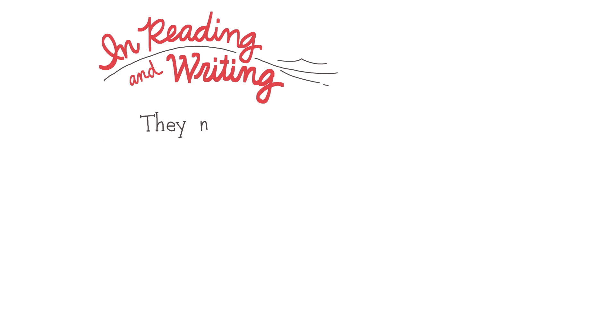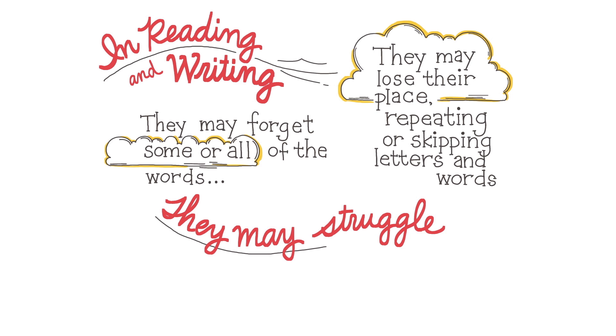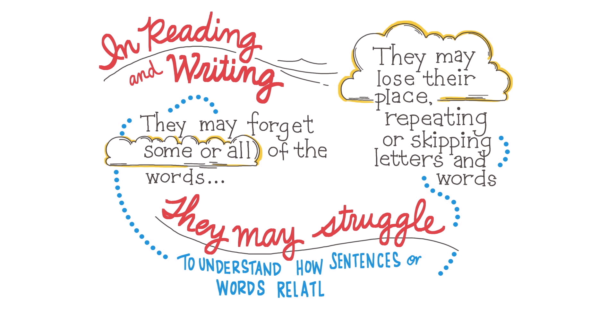In reading or writing, they may forget some or all of the words in a sentence or sequence of words. Or they may lose their place, repeating or skipping letters and words. As a result, they may struggle to understand how sentences or words relate to one another.